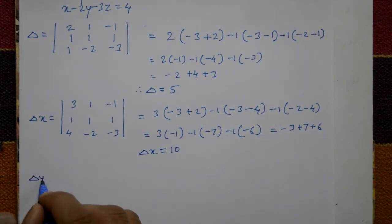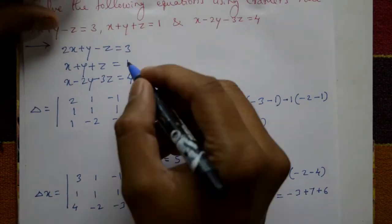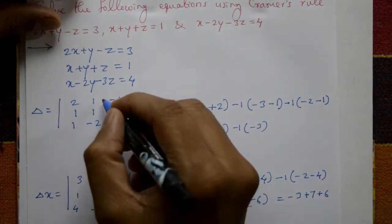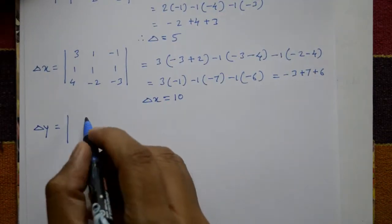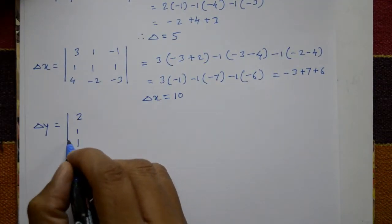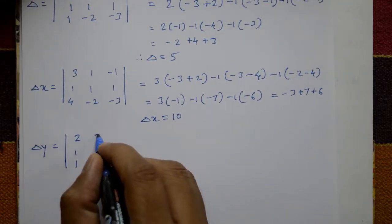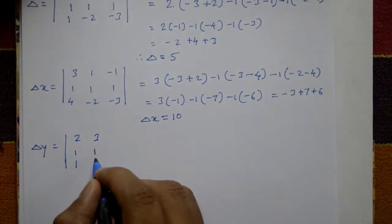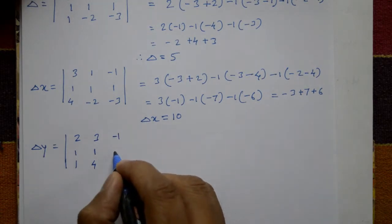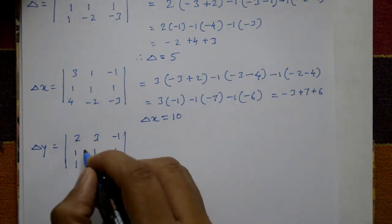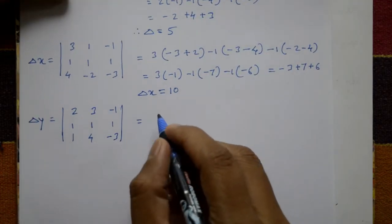Next, find Delta y. Delta y means change the second column, substituting 3, 1, 4. The first column remains 2, 1, 1 and the third column remains -1, 1, -3. Only the second column is changed. Expand this determinant.